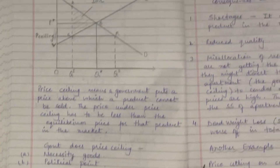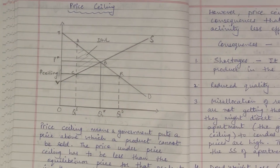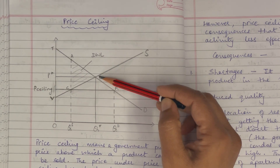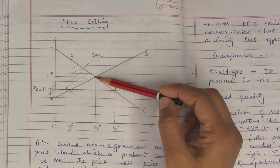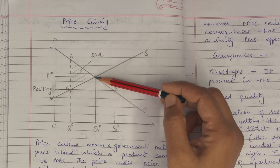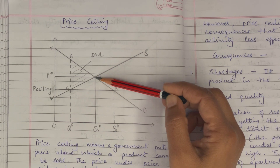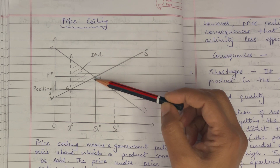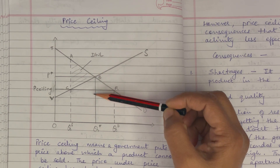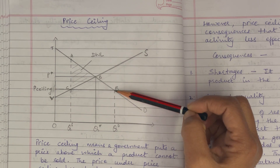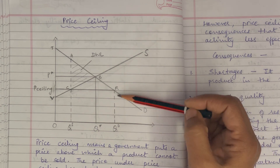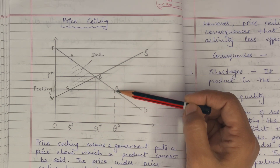Regarding rent controls — the government thinks landlords should not be able to charge very high rents to low-income groups because accommodation is one of the necessity goods. If left to the market, prices could go really high for rents, and that's why there is a price cap on rent. A similar case applies to petrol or gas prices and natural gas as well.